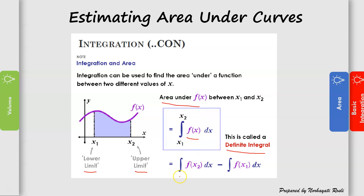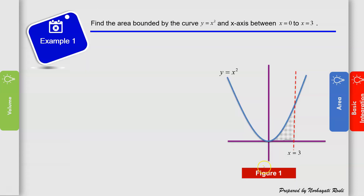To find the area under the curve we use the definite integral. When we solve it, we get F(x2) minus F(x1). Now for Example 1, we need to find the area bounded by the curve y = x² where x exists between x = 0 and x = 3.